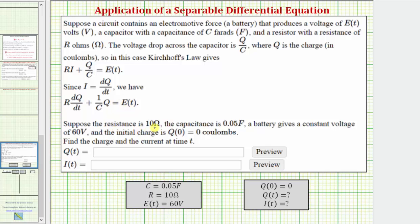Now suppose the resistance is 10 ohms, the capacitance is 0.05 farads, a battery gives a constant voltage of 60 volts, and the initial charge is Q(0) = 0 coulombs. We want to find the charge and the current at time t. We're given C, R, E(t), and Q(0) = 0, and we want to find the charge function and the current function.